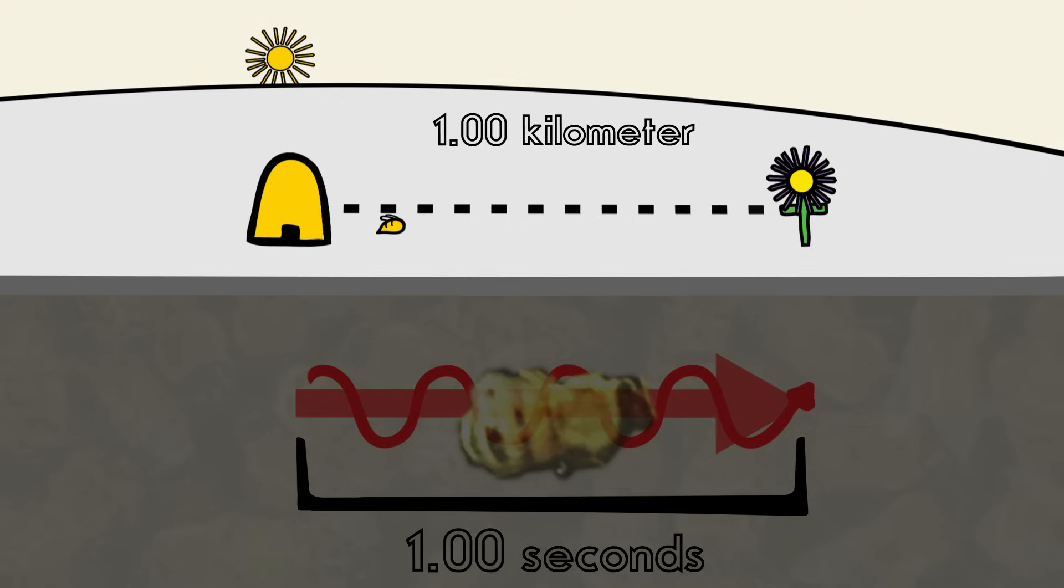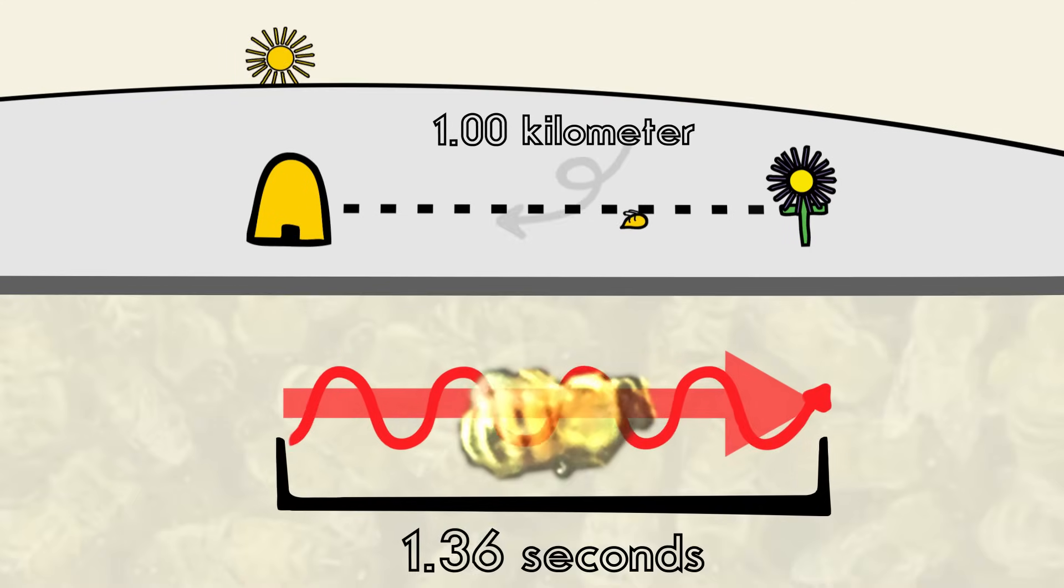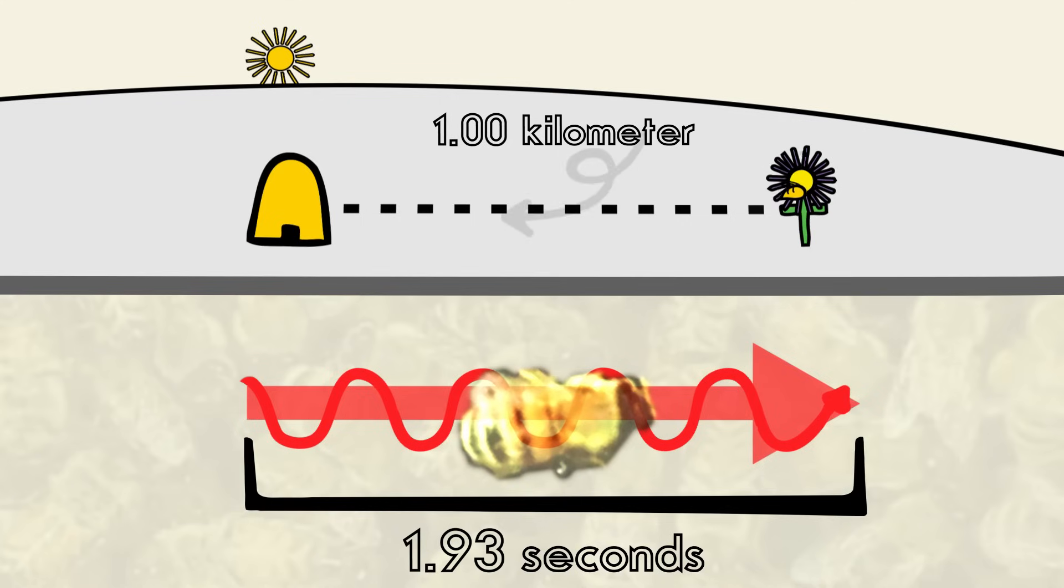For bees, distance is actually measured by the amount of energy it takes them to travel. Thus, a strong headwind could cause a bee to dance as if the food came from a further distance away.